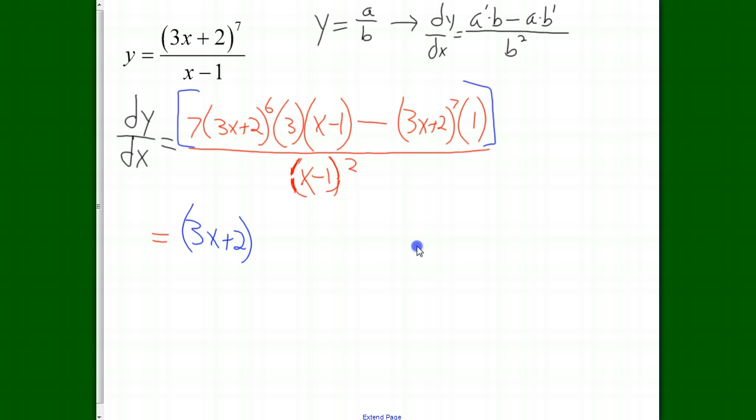Now, in the first term of the numerator, there are six of those factors of 3x plus 2. In the second term, there are seven of those factors of 3x plus 2. So the most we can take out of both is six of them. And that's the only common factor. You know, we've got a factor of one, but that doesn't do any good to factor it out. So this is all we can factor out.